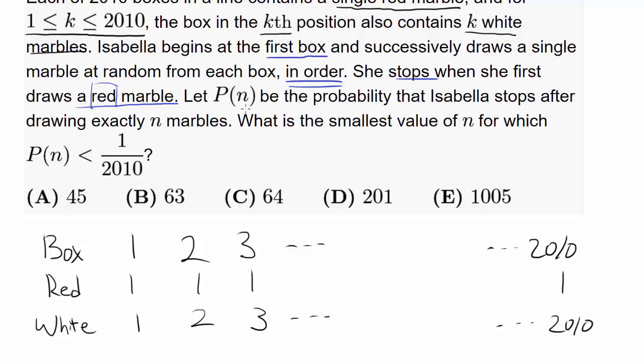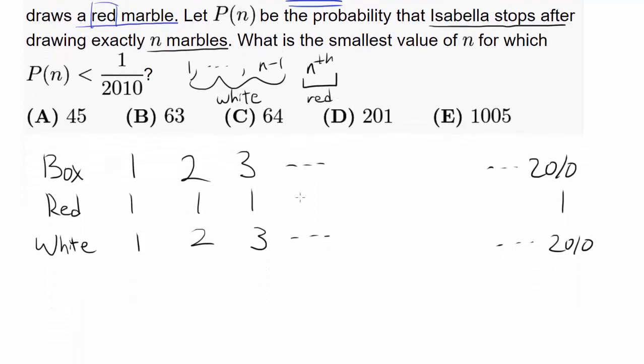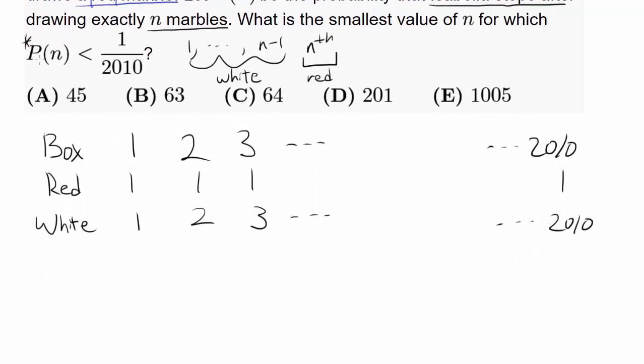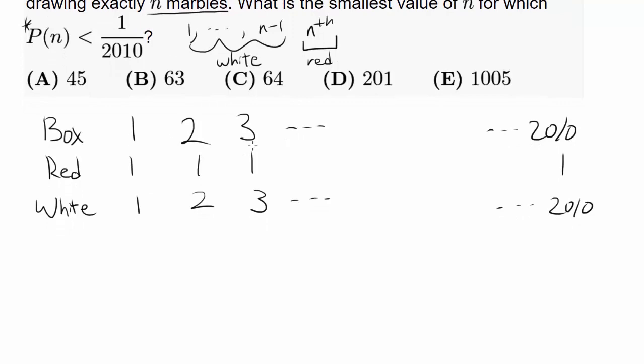Let P(n) be the probability that Isabella stops after drawing exactly n marbles. That's telling you every single marble from 1 all the way up to n-1 was white, and the nth marble, which made her stop, was red. We wish to find the smallest value of n for which P(n) is less than 1 over 2010.